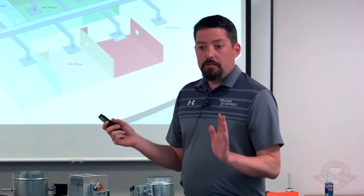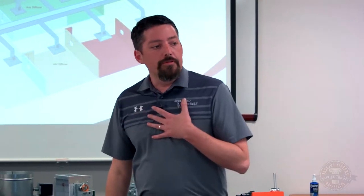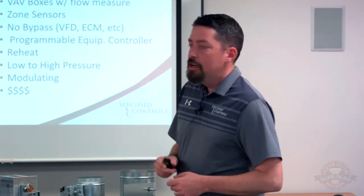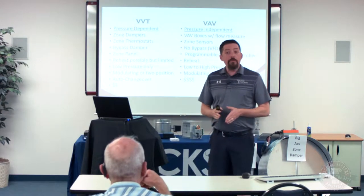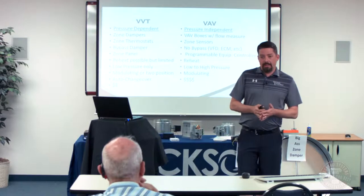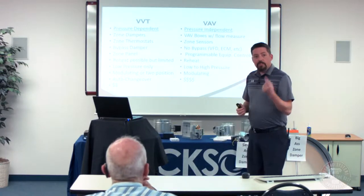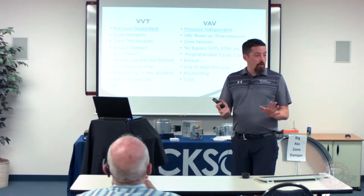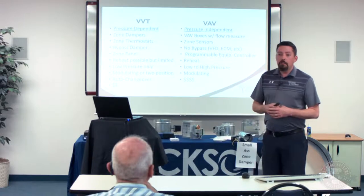What we want is zone dampers throughout the space instead of a VAV box — this is what we refer to as VVT zoning, meaning Variable Volume and Temperature. VVT zoning is pressure-dependent, has zone dampers not VAV boxes, uses zone thermostats not sensors, and has a bypass damper. You'll often hear a VVT system referred to as a bypass system. It has a zone panel, reheat possibilities limited to electric heat only, and is low pressure.